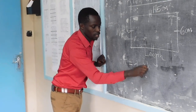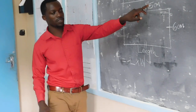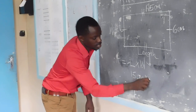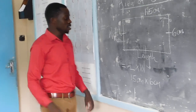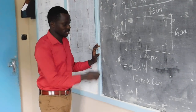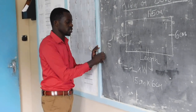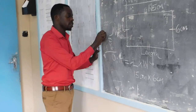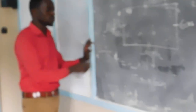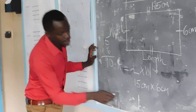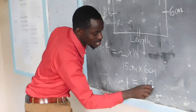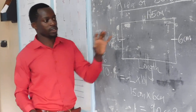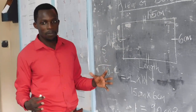The area of a rectangle is given by length times width. We multiply the length, which is 15 centimeters, by 6 centimeters. Using long multiplication: 6 times 5 gives 30, write 0 carry 3; 6 by 1 is 6 plus 3 gives 9. So our area will be 90 square centimeters. This is the area of a rectangle.